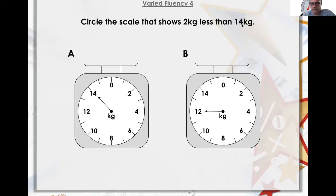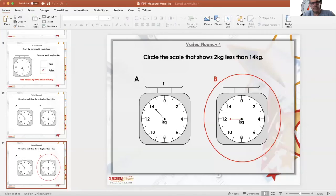14 take away two is 12, so it shows 12. And you see, look, 14? No, it's not that one. This one's 12. So what you really have to be careful of, children, is you've got to read the question.